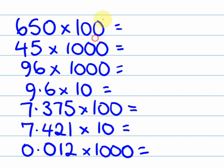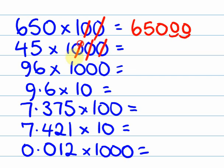Let's have a look. So we've got two zeros on this one here. So we're going to move the decimal place on the 650 two times. So 650, I'm going to move it one, two times. The answer is 65,000. This one, we've got three zeros. The decimal place is going to have to jump three times. So 45, one, two, three. 45,000 is the answer.